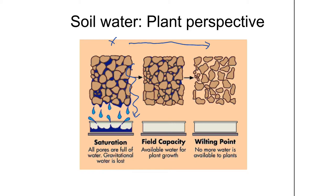At some point, the water that's free in soil and can move by gravity is gone. Now there's still water left — this is called field capacity — what the soil will hold by what's clinging to the particles. As time goes on, if there's no further water inputs, the soil continues to dry out. There's still water here, but the films just become thinner and thinner.